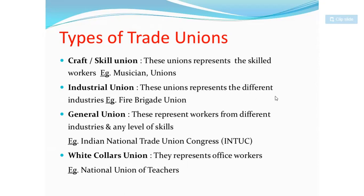To summarize the types of trade unions: the first is the craft or skill union, the second is the industrial union, the third is the general union, and the fourth is the white-collar union.